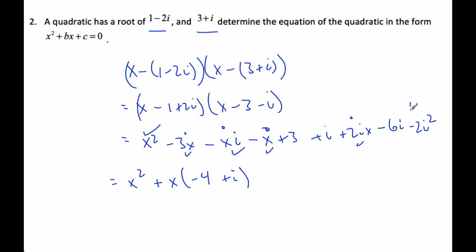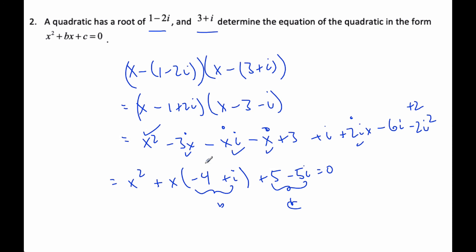Finally, for the constants, I have 3 plus i minus 6i, and the negative 2i squared gives a plus 2. So 3 plus 2 is plus 5, and i minus 6i will be minus 5i, equal to 0. So this is b and this is c. We brute forced it all out, multiplying things out and making sure we don't mess up the positives and negatives, and this is what our quadratic will be.